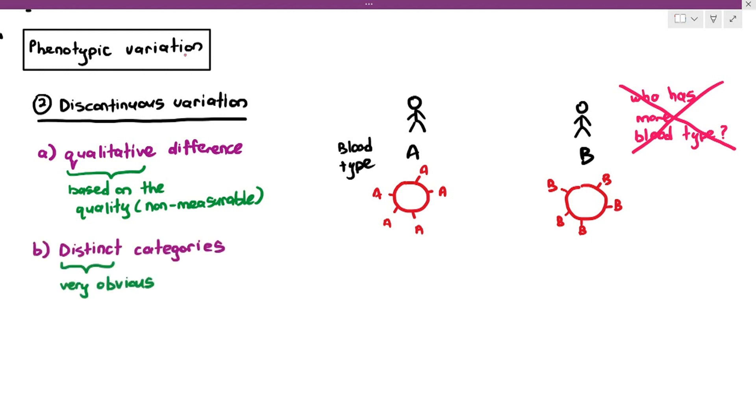One person has a blood type A with A-type glycolipids on the cell surface membrane of the red blood cells, and the blood type B has B-type glycolipids on the cell surface membrane of their red blood cells. You don't have to memorize that. Don't worry about that glycolipid part. So it's non-measurable in this case. You don't have to measure it. Number two, the categories are very distinct. Remember, distinct means it's extremely obvious that there is a difference.